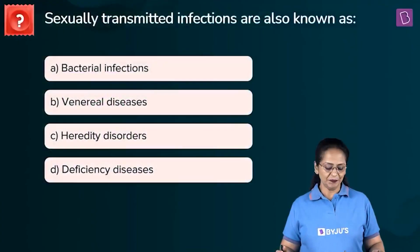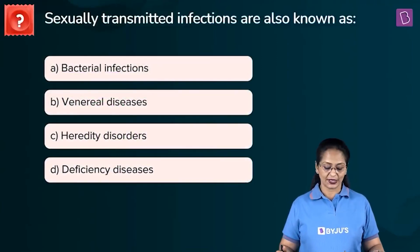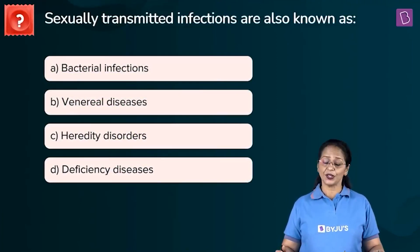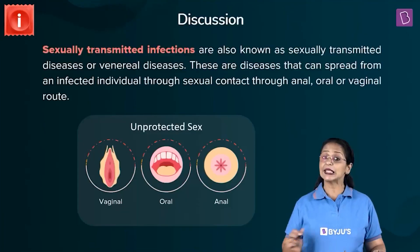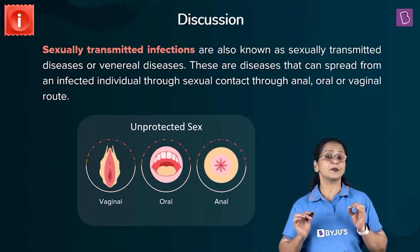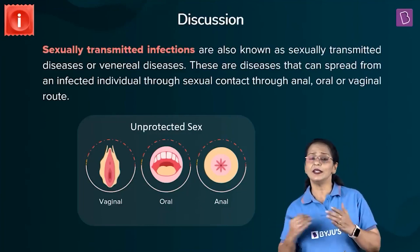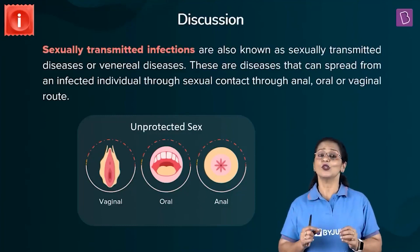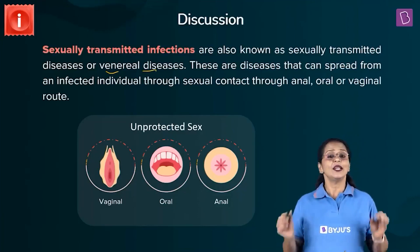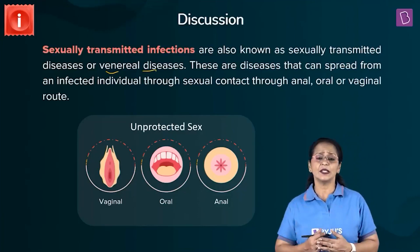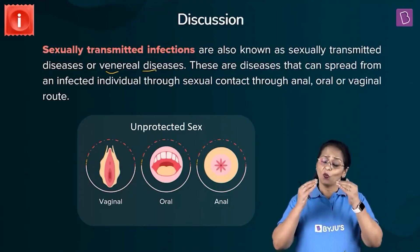Let's look at this question: sexually transmitted infections are also known as — a) bacterial infections, b) venereal diseases, c) heredity disorders, or d) deficiency diseases. Sexually transmitted infections, STIs, are also known as sexually transmitted diseases, STDs, and are also called venereal diseases, or VD.